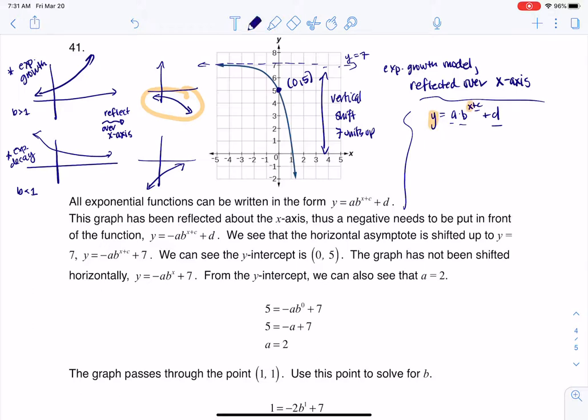So like I said, if we go to where we are so far, c was zero, because I did not shift left or right, and d was seven, because I shifted seven units up.